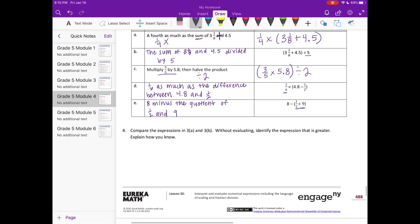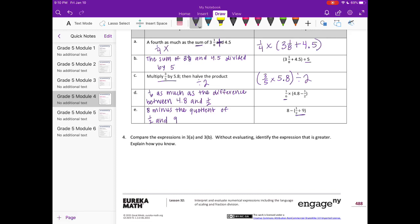Number 4, compare the expressions in 3a and 3b. Without evaluating, identify the expression that is greater. Explain how you know. So in A, we have 1 4th times something, and in B, we have divided by 5. So divided by 5 is the same thing as multiplying by 1 5th. So I could take that out and change it to multiplying by 1 5th.